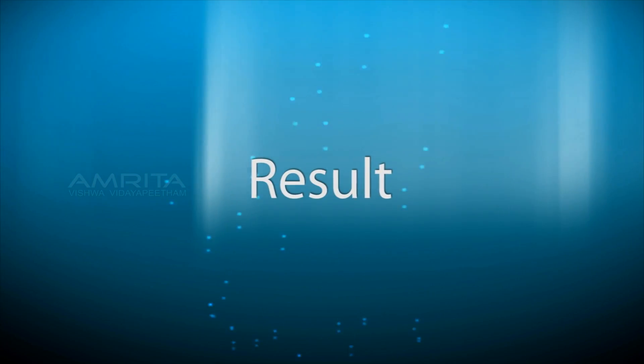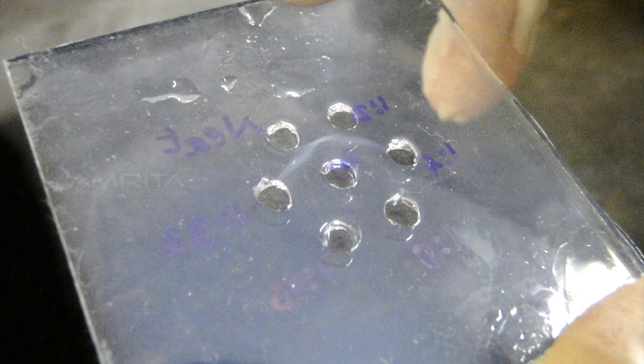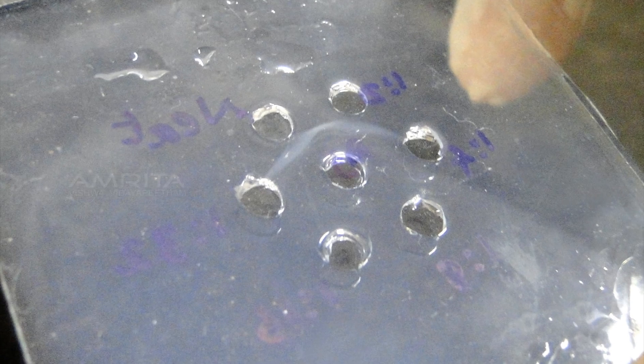Result: The highest dilution at which the precipitant line formed is 1:2. This is the titer value of the antiserum.